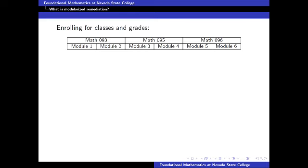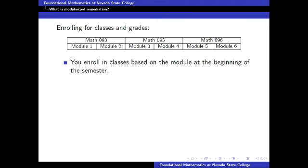One aspect of the system is that it sometimes causes confusion about enrollment and grades. So the next few slides are going to help you to understand how this works. You will enroll in classes based on the module that you are in at the beginning of the semester. So this means that if you are in modules one or two, you enroll in math 93. If you start in modules three or four, you enroll in math 95.